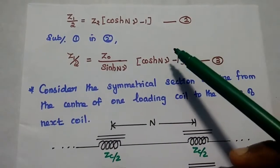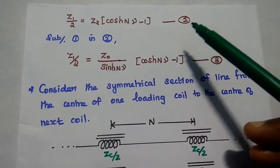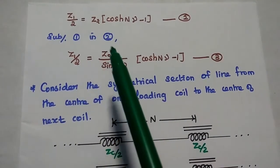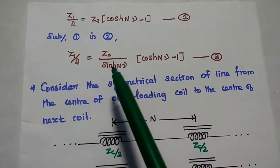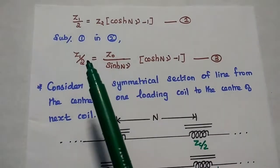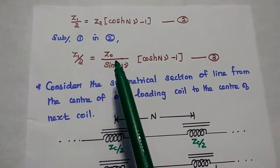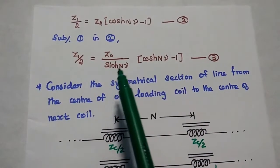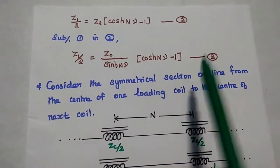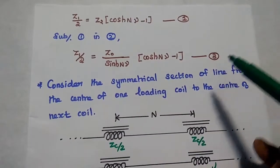Next, we are going to substitute the first equation into the second equation. We replace Z2 with Z0 by sinh(Nγ). Then we get Z1 by 2 is equal to Z0 by sinh(Nγ) multiplied by (cosh(Nγ) minus 1). Consider this as the third equation.